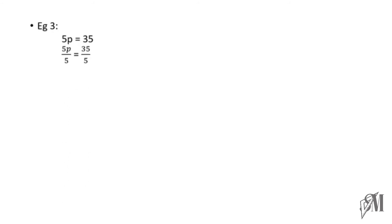The third example is 5p equals 35. Here 5p means 5 multiplied by p equals 35. The opposite of multiplication is division, so we divide both sides by 5 to cancel off 5, giving p equals 7 because 35 divided by 5 is 7. Using the other method, take 5 to the other side where it becomes division: p equals 35 divided by 5 equals 7. Verification: 5 into 7 equals 35 — answer is correct.